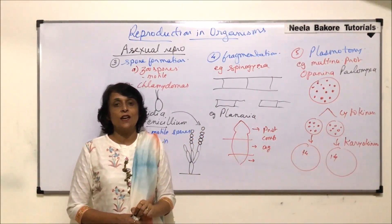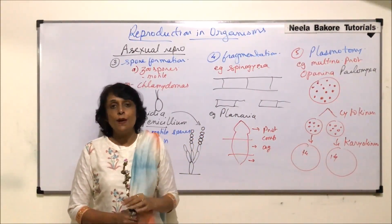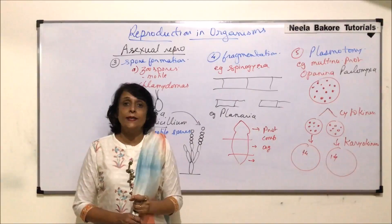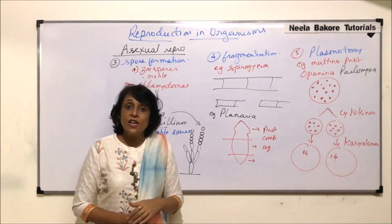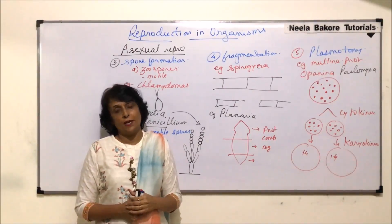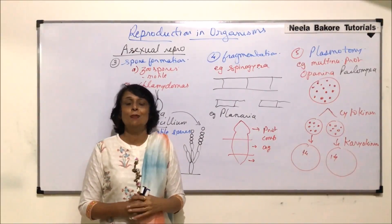In the next part we will take up one more method of asexual reproduction, that is vegetative propagation in plants.